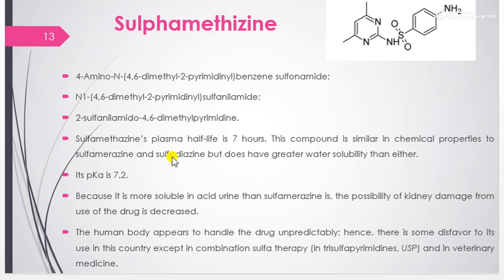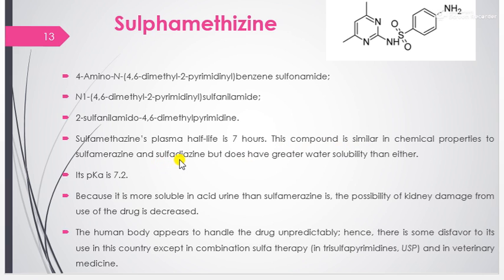Our next drug is sulfamethazine: 4-amino-N-(4,6-dimethyl-2-pyrimidinyl)-benzenesulfonamide, also known as N-1-(4,6-dimethyl-2-pyrimidinyl)-sulfanilamide or 2-sulfanilamido-4,6-dimethylpyrimidine. Sulfamethazine has a plasma half-life of 7 hours. This compound is similar in chemical properties to sulfamerazine and sulfadiazine, but does not have greater water solubility than either. Its pKa value is 7.2.